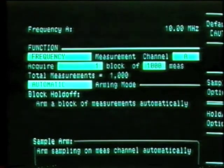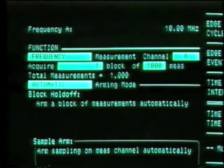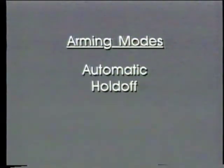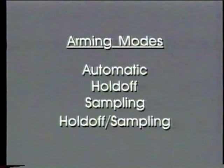Third, we select an arming mode. There are four major categories of arming options: automatic, holdoff, sampling, and both holdoff and sampling. If we select automatic, the 5371 will make measurements immediately and as fast as possible, up to every 100 nanoseconds.